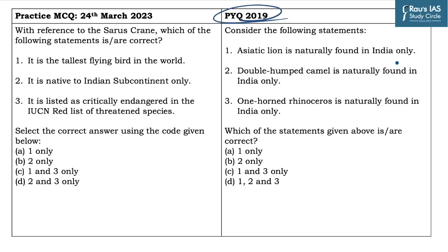You can solve this question by applying your common sense. Before explaining the previous year question, we will go through the practice MCQ which says: with reference to Sarus Crane, which of the following statements is or are correct? The first statement says it is the tallest flying bird in the world — yes, this statement is correct. It is indeed the tallest flying bird in the world.